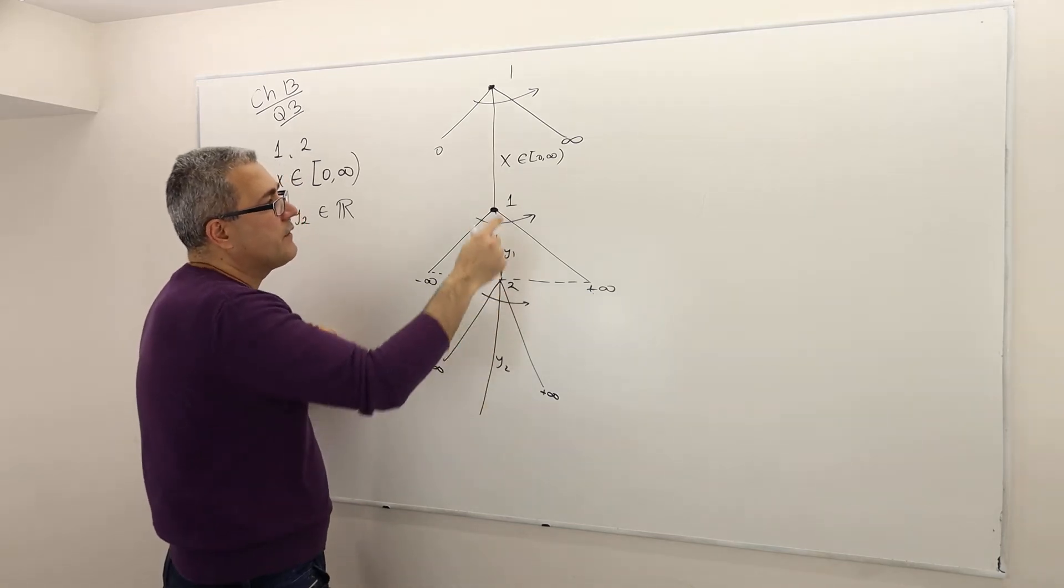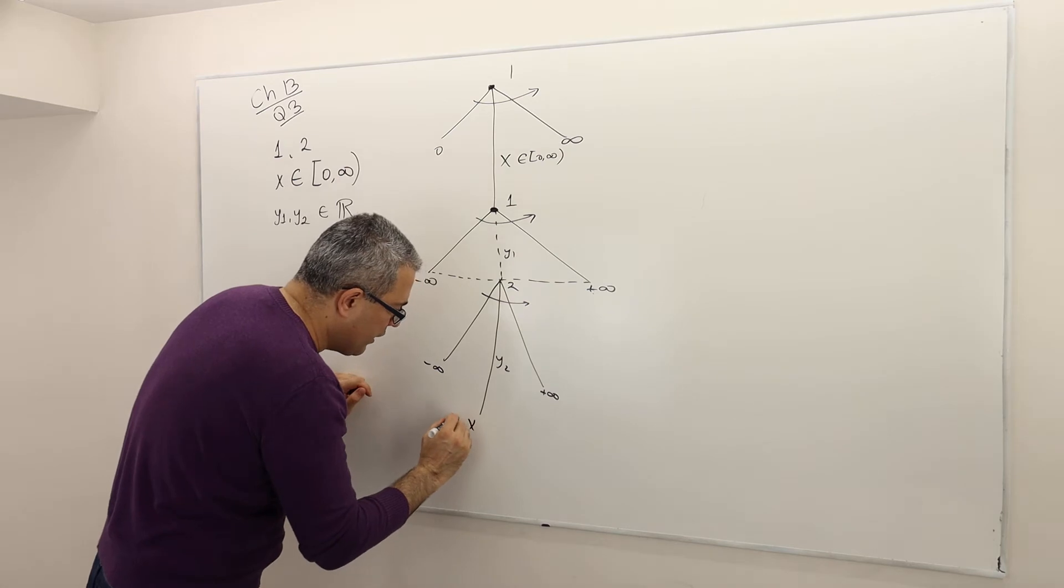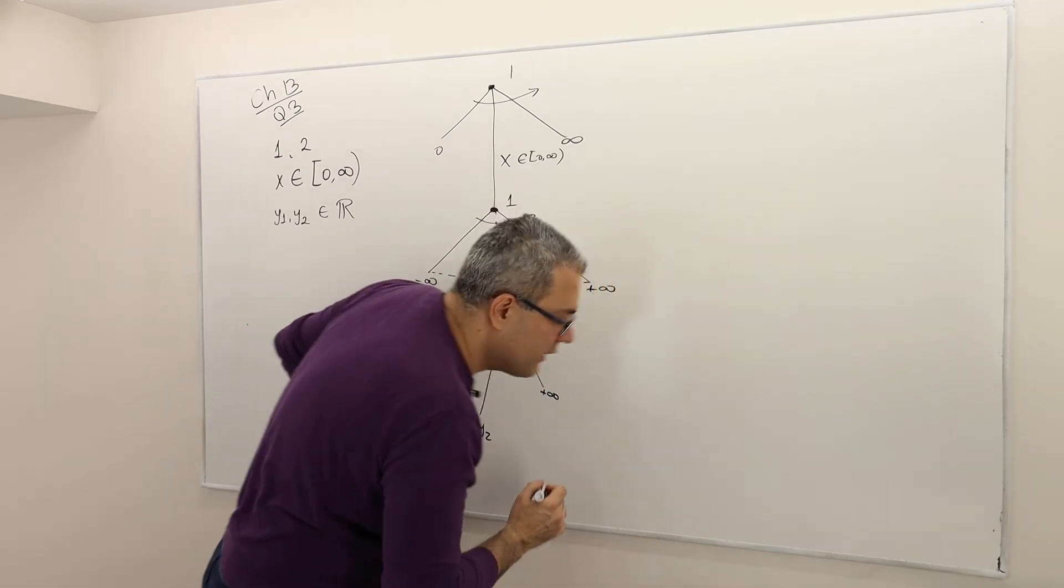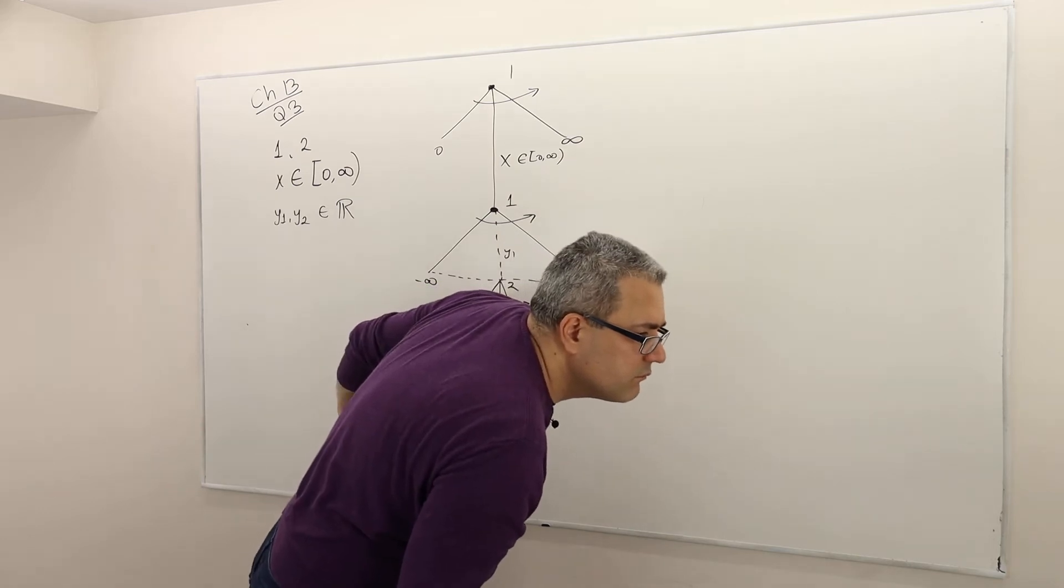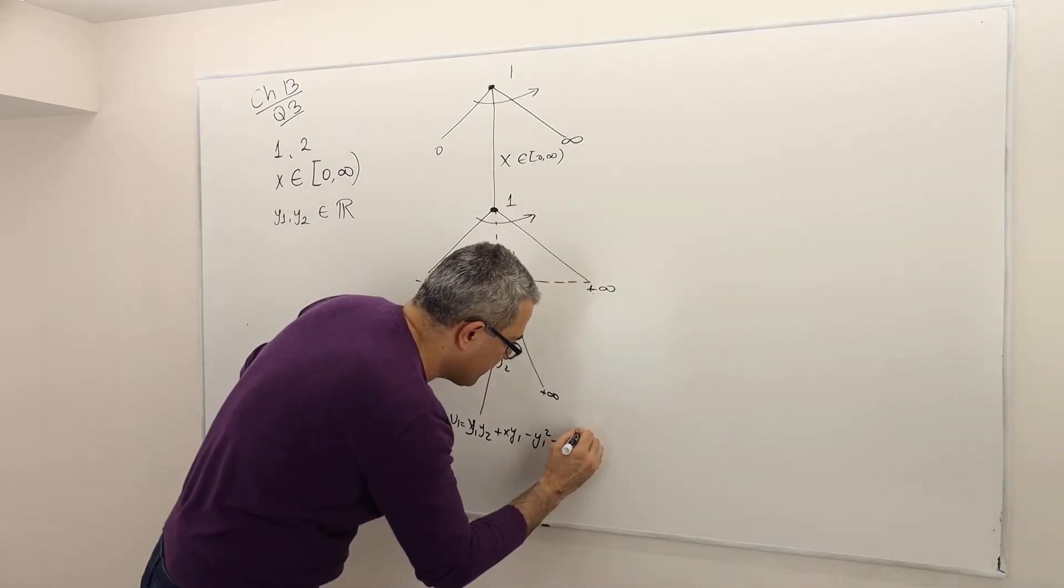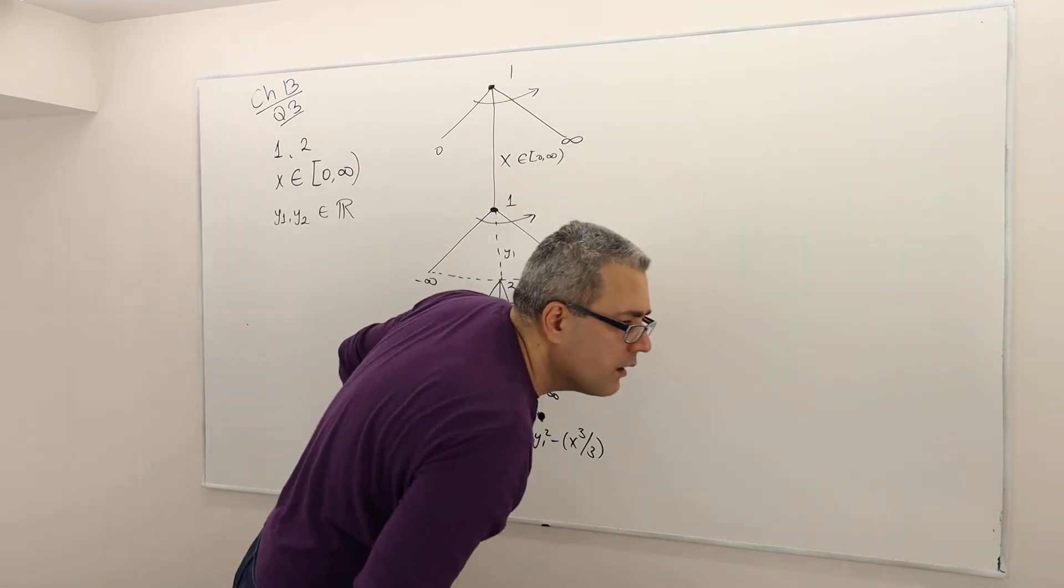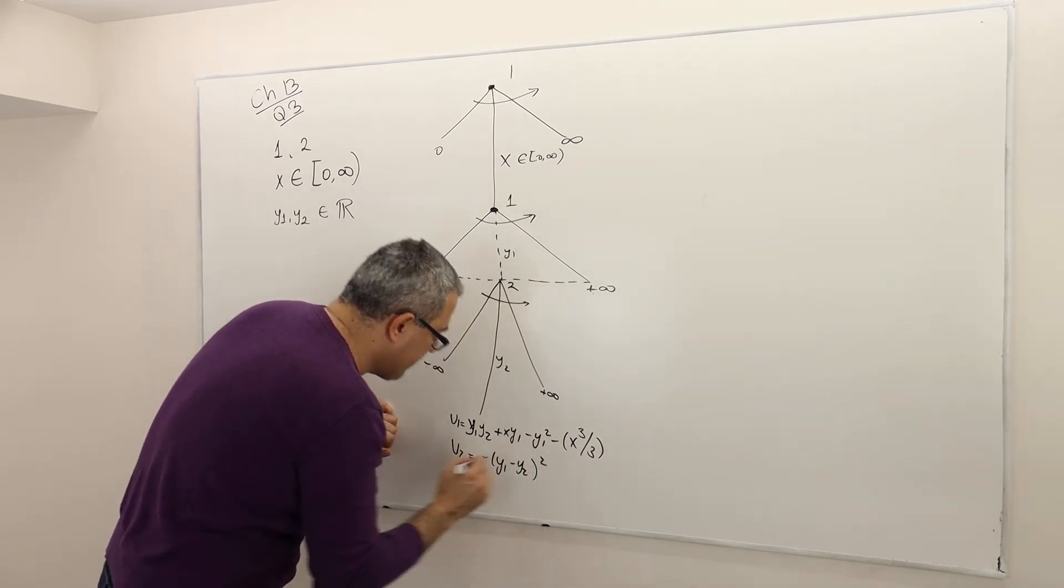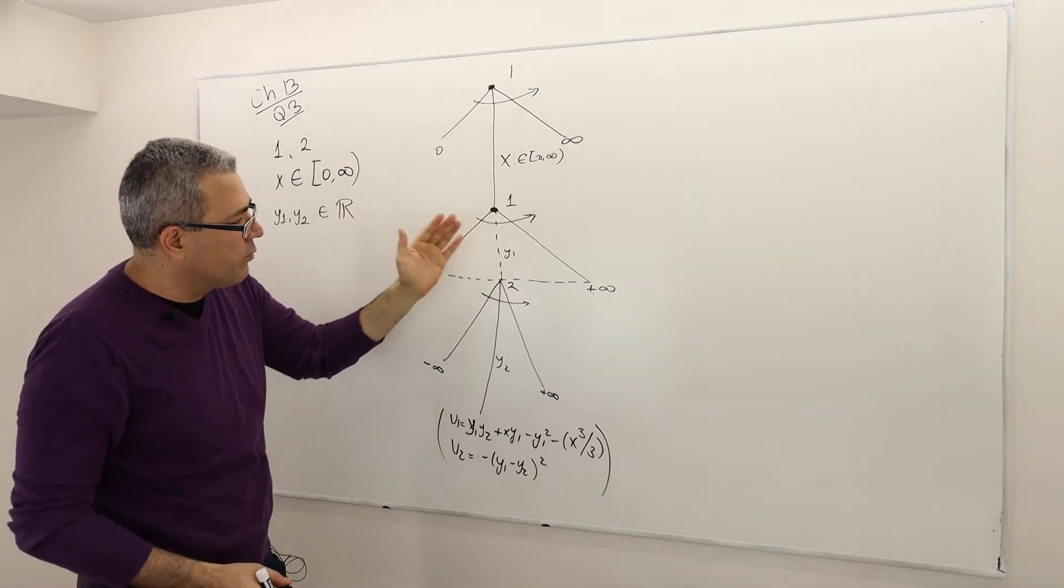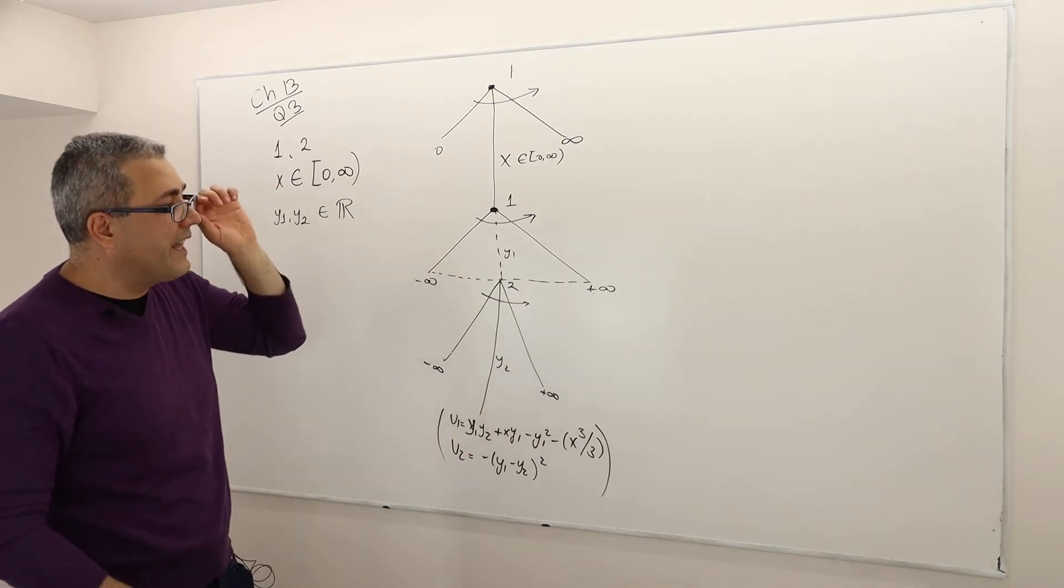And then the game is over. But because x, y1, and y2 are chosen, here are going to be the payoffs. These are complicated payoff functions. u1 equals y1·y2 + x·y1 - y1² - x³/3. And u2 equals -(y1 - y2)². So that's the payoff. Obviously, as you change the value of x, as you change the value of y1 and y2, the payoff will change because the payoffs are given as a function of y1, y2, and x. But this is what the game will look like.